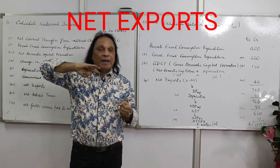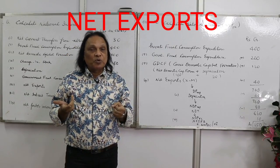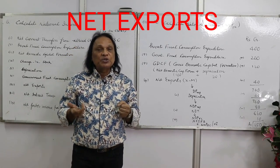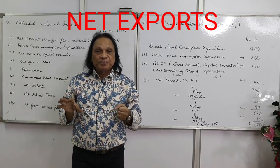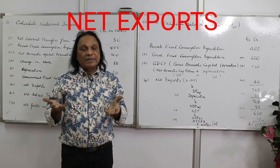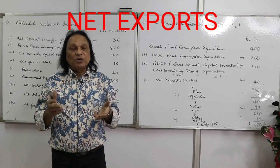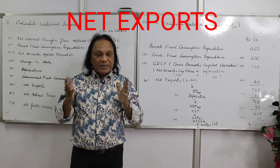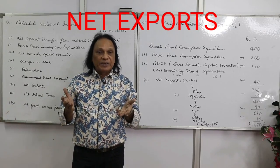Net exports equals exports minus imports. So to summarize: private final consumption expenditure plus government final consumption expenditure plus gross domestic capital formation plus net exports. When you add all these four expenditures, you get GDP at MP — gross domestic product at market price.